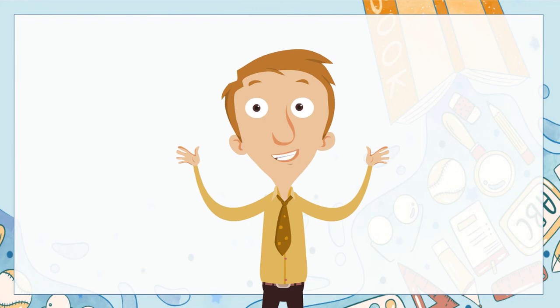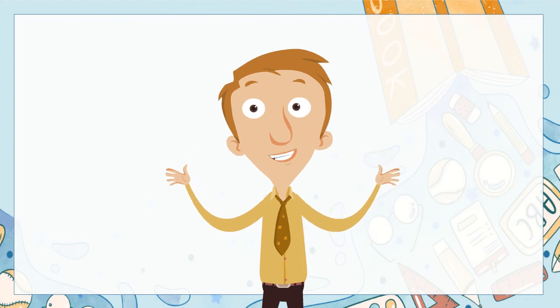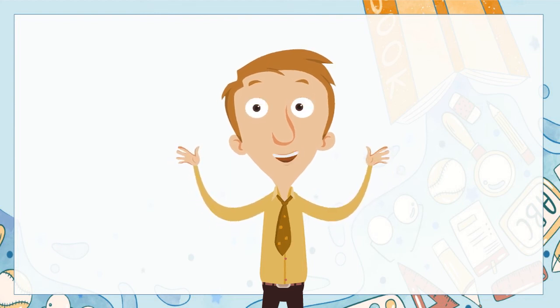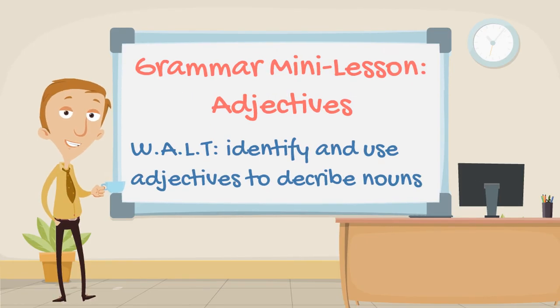There we have it! Now we know what an adjective is, we know how to identify them, and we know how to use them. We're ready to try the practice activities below. Before you go — what is your favorite food? Describe it without naming it using adjectives, and I'll try to guess what food you're talking about. Our goal for today's mini-lesson was to identify and use adjectives to describe nouns. That's all we have time for today. Until next time, take care.